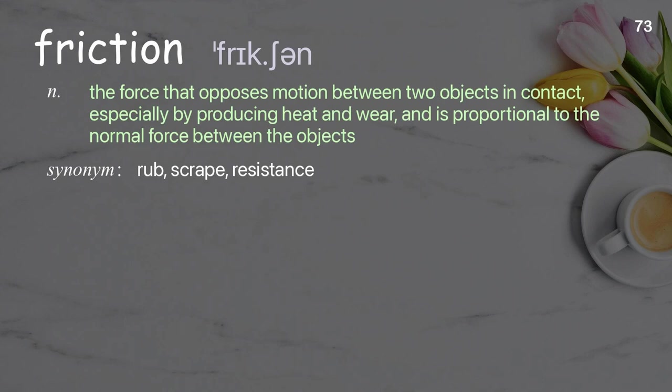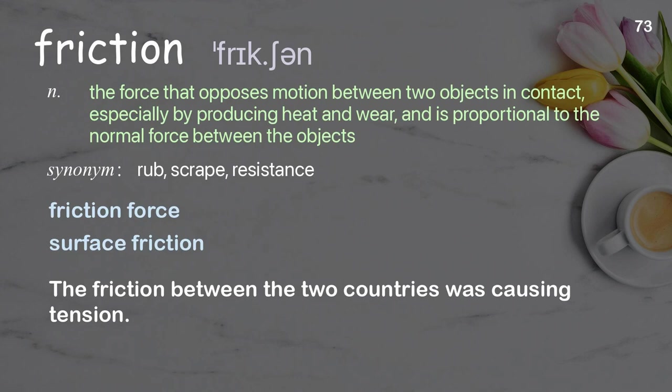Friction: the force that opposes motion between two objects in contact, especially by producing heat and wear, and is proportional to the normal force between the objects. Examples: friction force, surface friction. The friction between the two countries was causing tension.